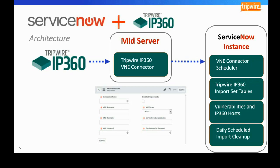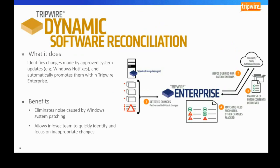Next, we have Dynamic Software Reconciliation, or DSR. DSR was created to address the Patch Tuesday challenge, which can be a significant obstacle for any integrity monitoring solution. Microsoft releases the latest batch of hotfixes and security patches on the third Tuesday of the month. Over the following days, the security and operations team downloads, tests, and schedules implementation of those patches in an upcoming maintenance window.